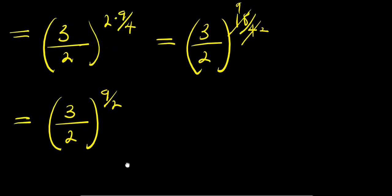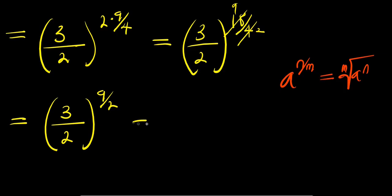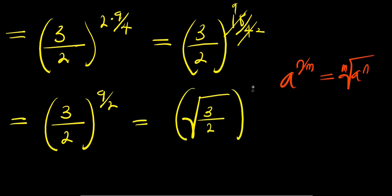So, we can consider this identity: if you have a raised to the power of n over m, this equals the m-th root of a raised to the power of n. So, applying that here, we will have the square root of 3 over 2, and this is raised to the power of 9.